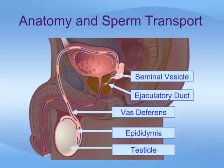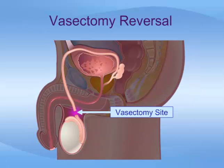The vas leaves the scrotum and travels through the groin then down into the pelvis beside the bladder to enter the prostate, where it joins the ejaculatory ducts. The vasectomy procedure usually involves tying or clipping a small section of the vas just above the testicle, then removing the segment in between.